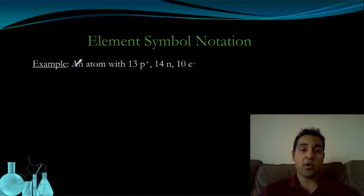Here we are with element symbol notation. This is something that we mentioned a few videos ago, but we're going to look at what happens now with electrons. So here we have an example. Given an atom with 13 protons, 14 neutrons, and 10 electrons, what's the element symbol notation going to be?